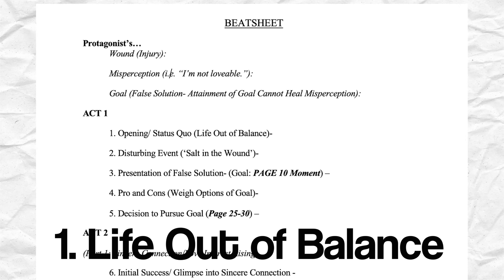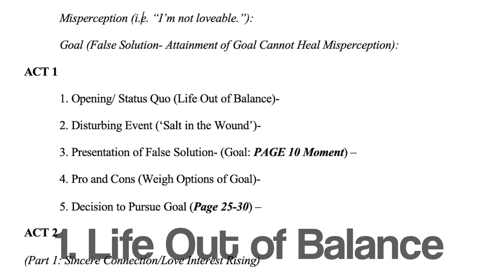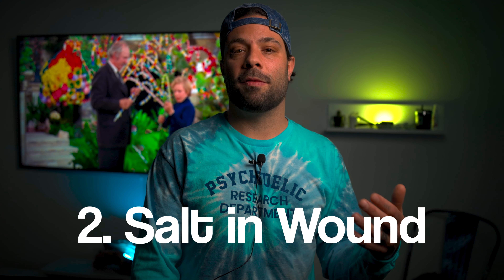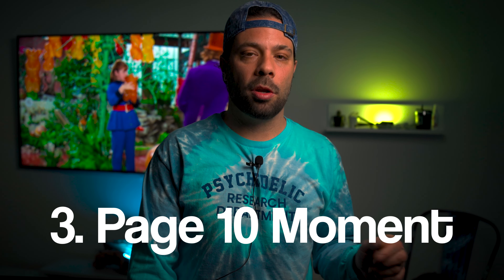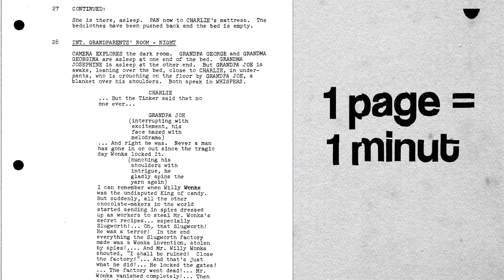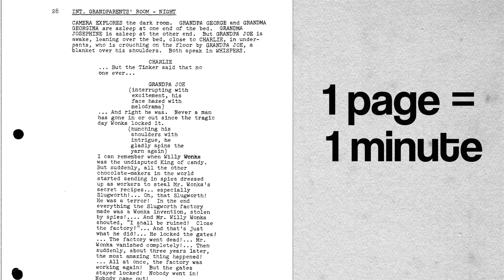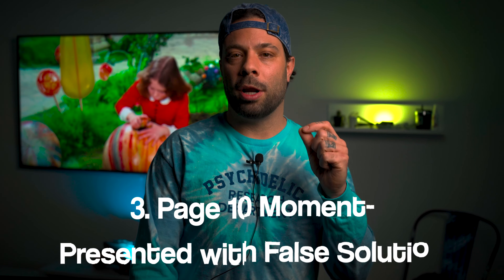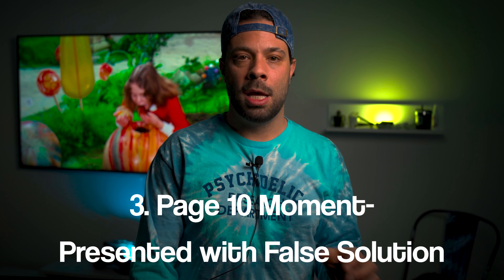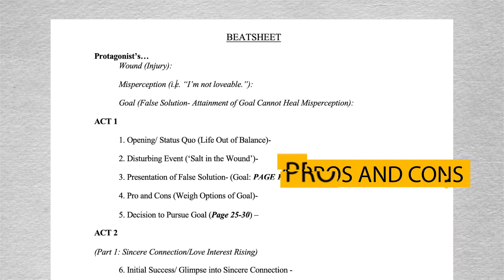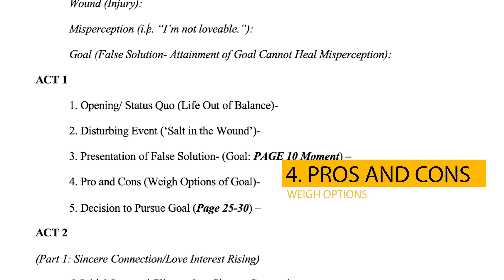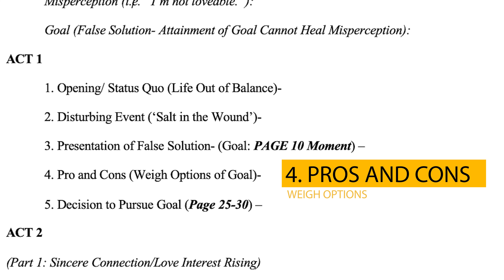Act one — our beginning — the first 30 pages is broken up into five main parts: our opening showing status quo but life out of balance; our disturbing event or salt-in-the-wound moment; part three is that page 10 moment — in a screenplay, a page equals a minute. At minute or page 10, our inciting incident occurs when our hero is presented with a false solution, his goal. Then our hero weighs the pros and cons of the goal. Finally, part five: their decision to pursue that goal at roughly page or minute 25 to 30, leading us into act two, the middle.